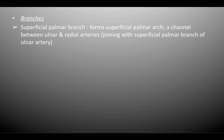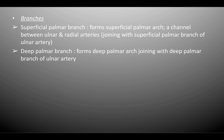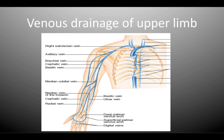The branches of the ulnar artery include the superficial palmar branch, which forms the superficial palmar arch — another channel between the ulnar and radial arteries — joining with the superficial palmar branch of the radial artery. It also has a deep palmar branch which forms the deep palmar arch, joining with the deep palmar branch of the radial artery as mentioned earlier.